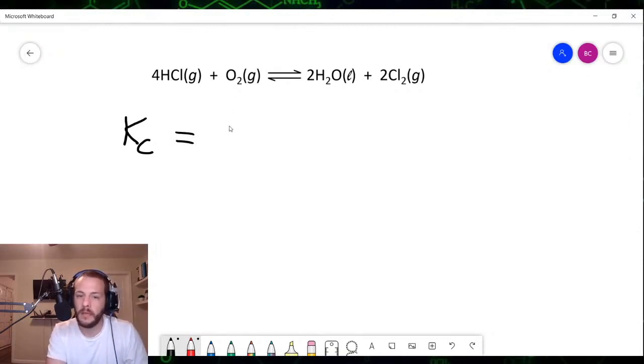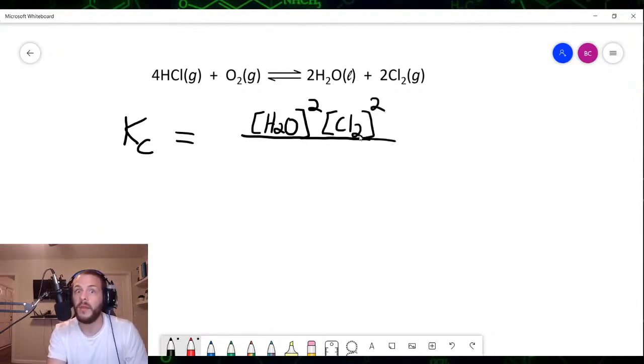We would be inclined to conclude that the expression for the equilibrium constant is going to be the concentration of water, H2O, raised to the second power because there's a coefficient of two in front of it, times the concentration of chlorine, Cl2, also raised to the second power because it also has a coefficient of two, divided by the concentration of HCl raised to the fourth power,